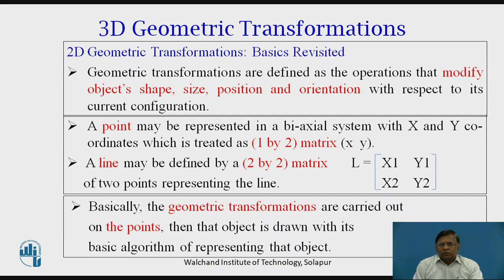As we have discussed earlier, a point normally we represent in bi-axial system with x y coordinates, which we perceive as a 1 by 2 matrix. A line we perceive as a 2 by 2 matrix, passing through two coordinates x1 y1 and x2 y2. This is a basic fundamental aspect of how we represent points and lines in geometric transformations.